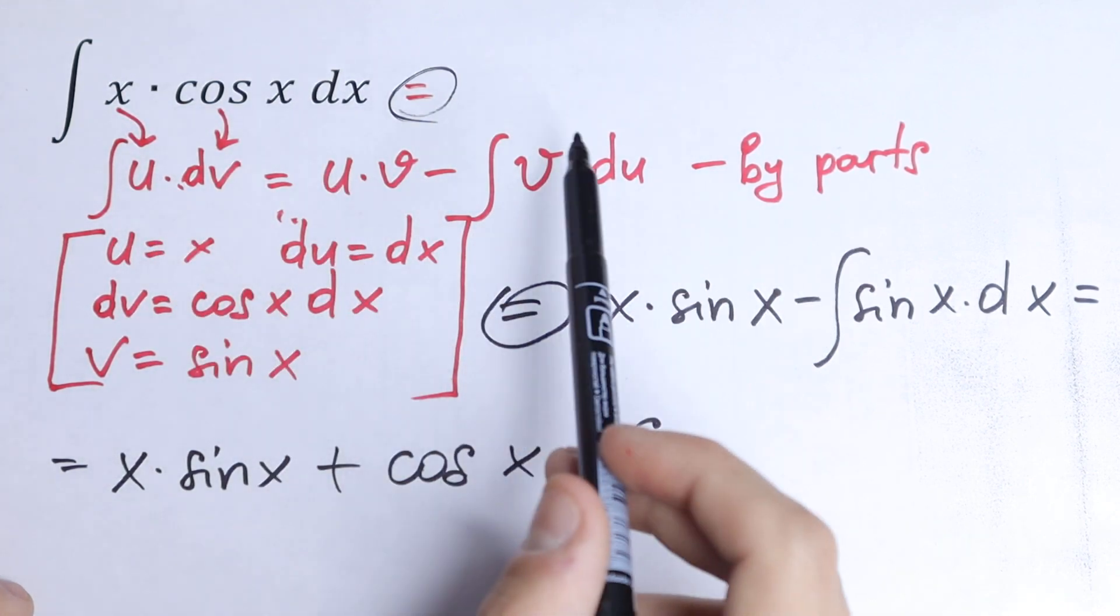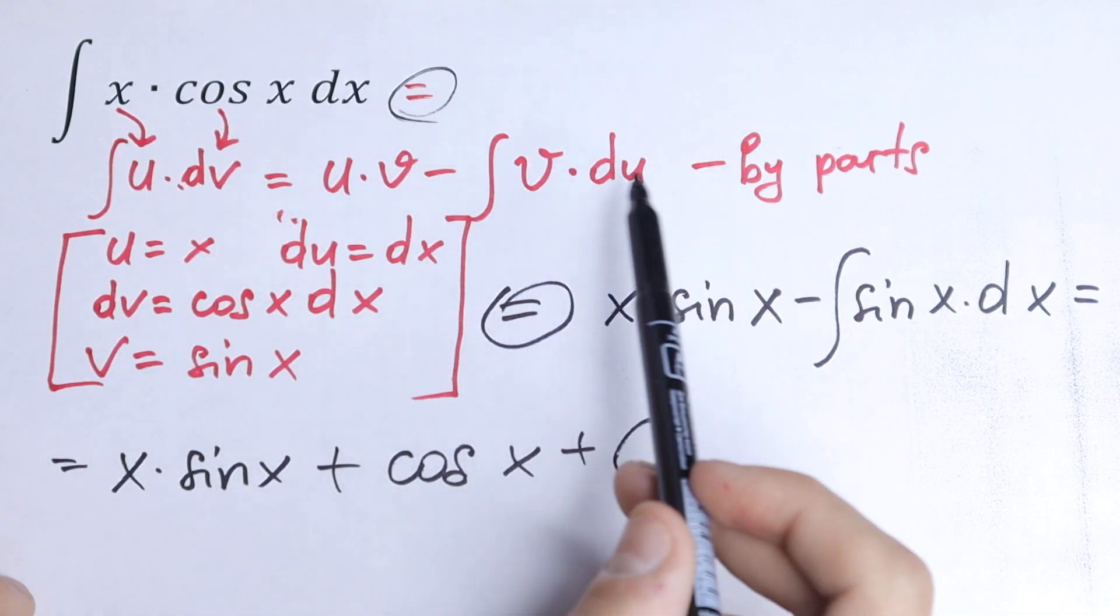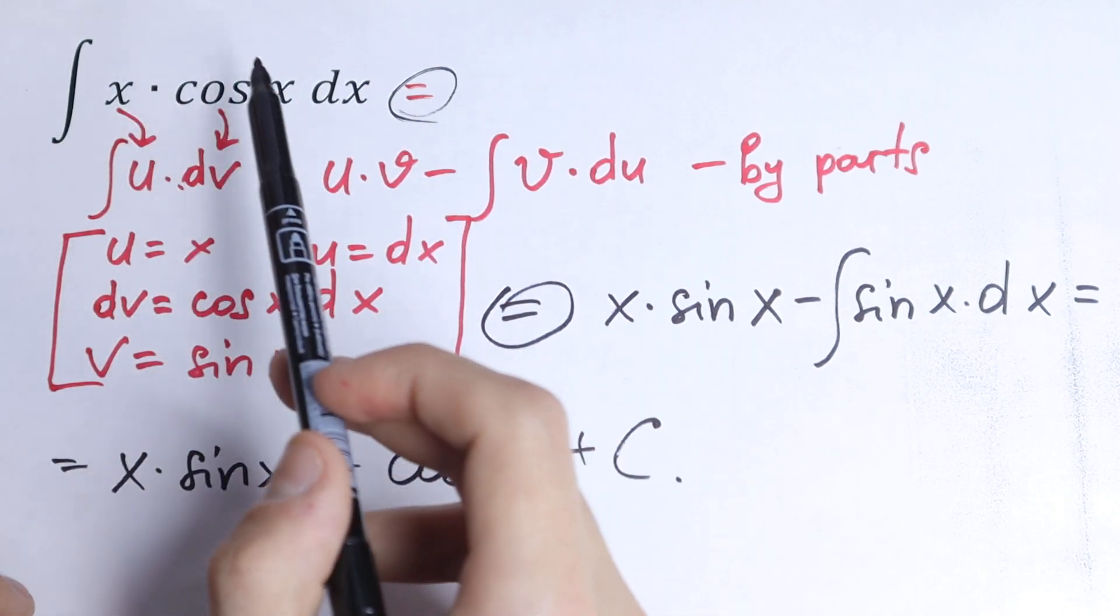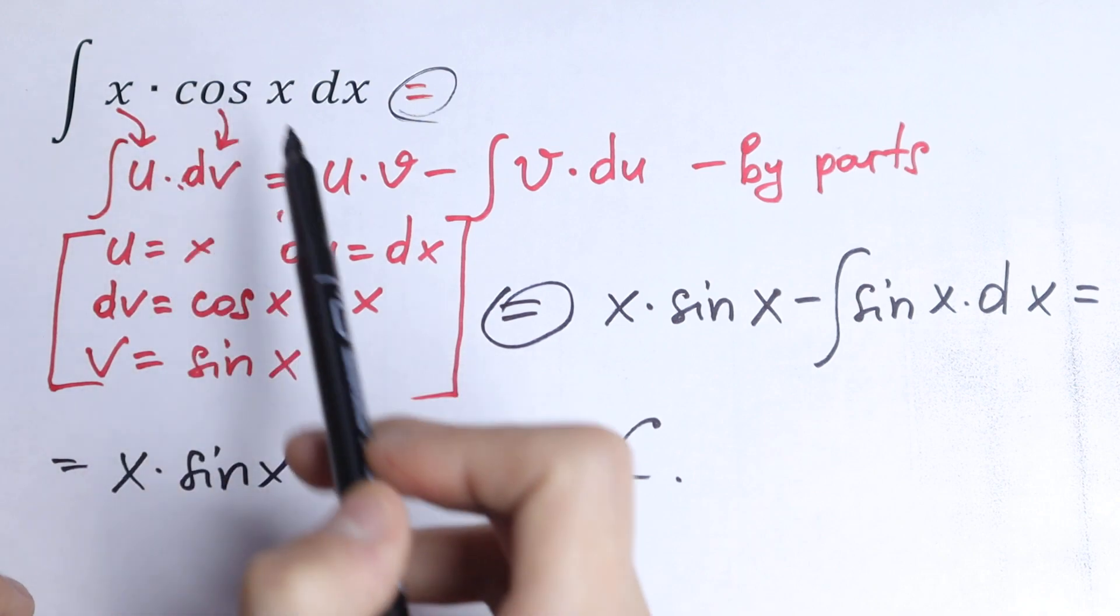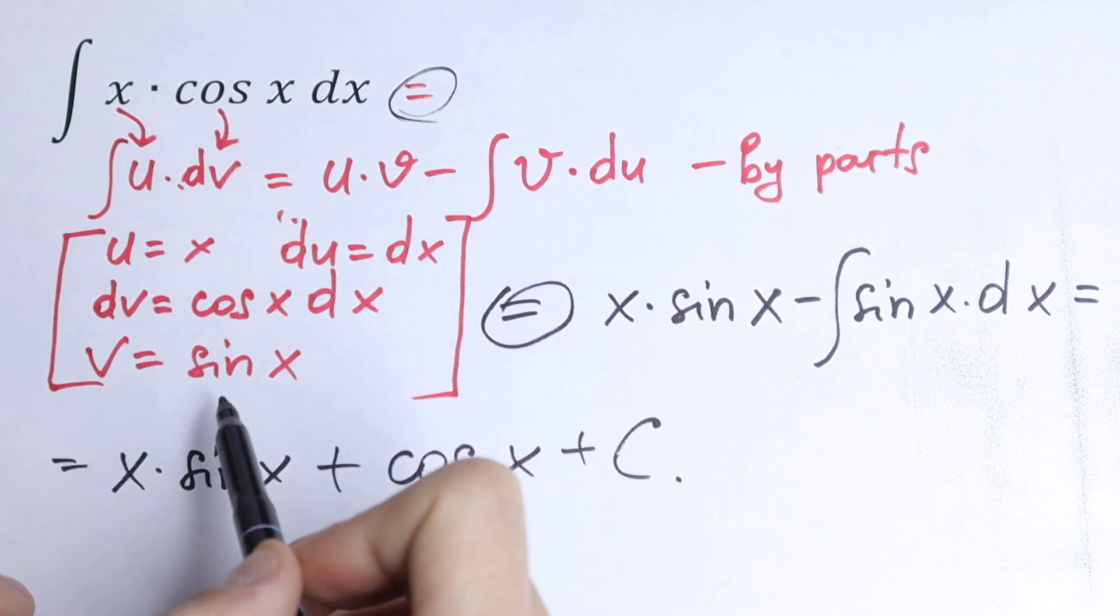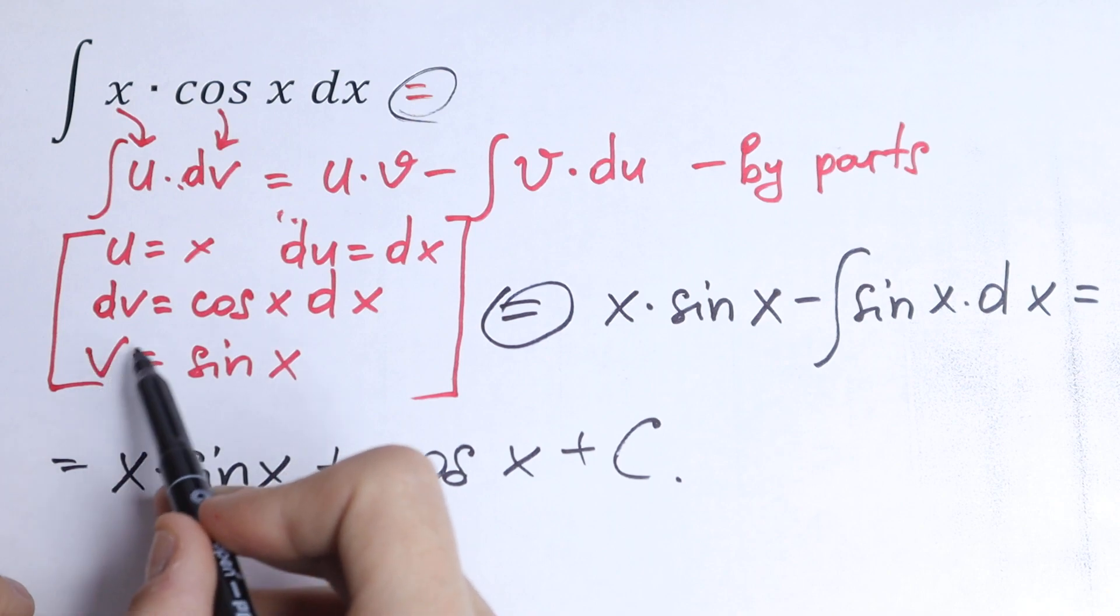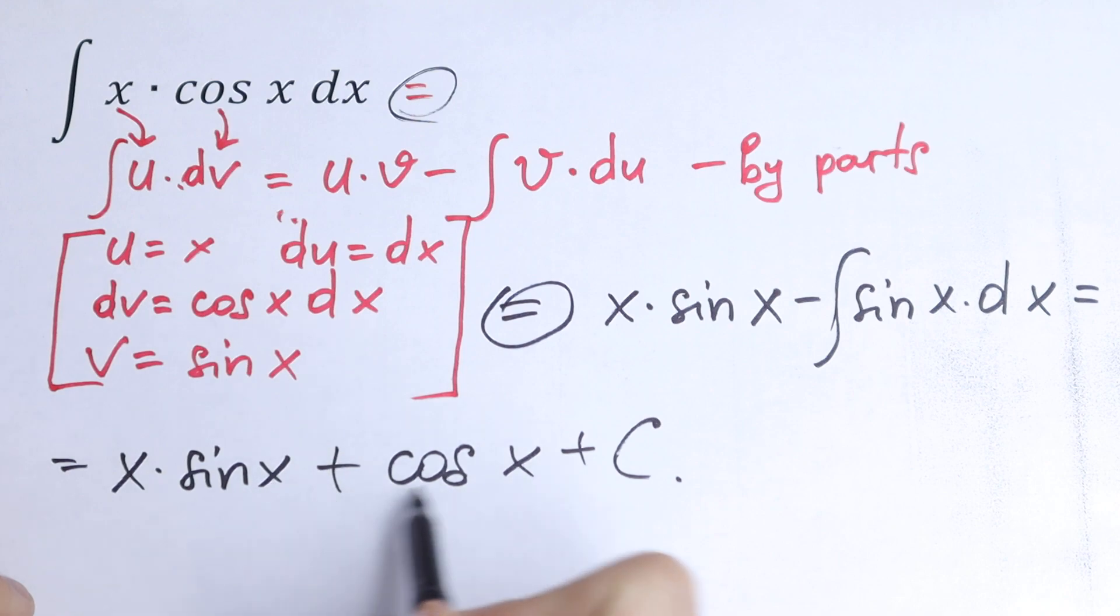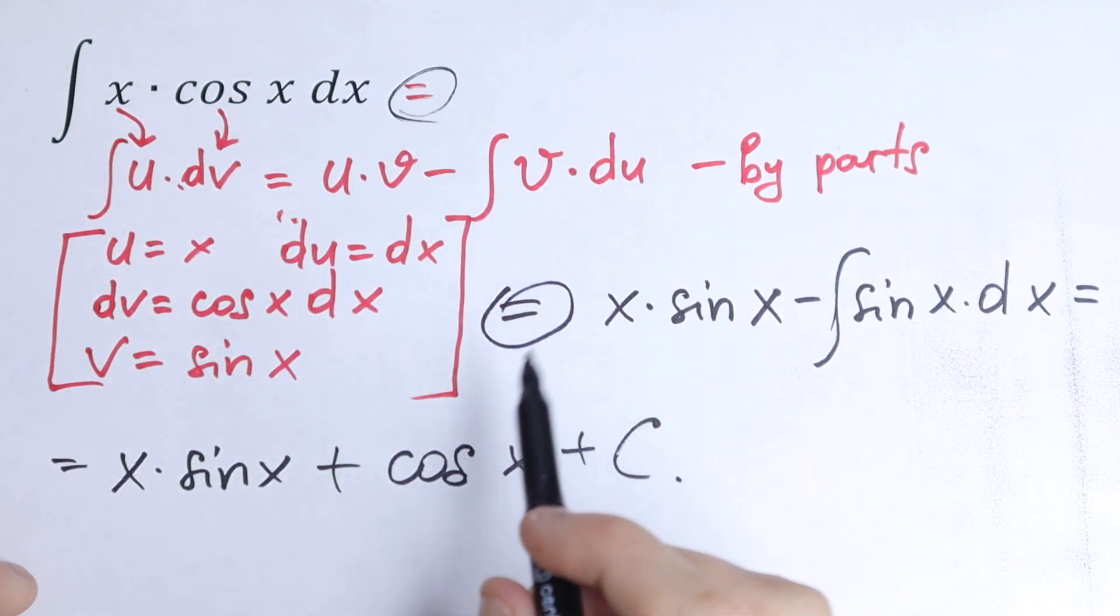So learn this formula. If you have any questions, write them in the comments. This is a really good formula if you have a complicated integral. We just find our u, find dv, and calculate. This will be our derivative du, and if we have dv we need to integrate to get v, then put it in our formula. This is easier to calculate with this formula.